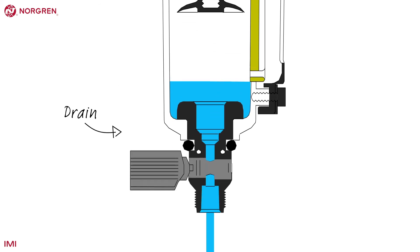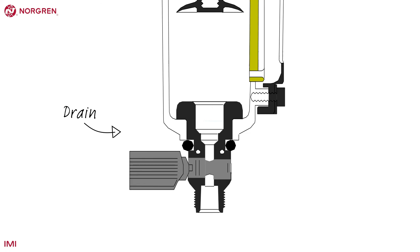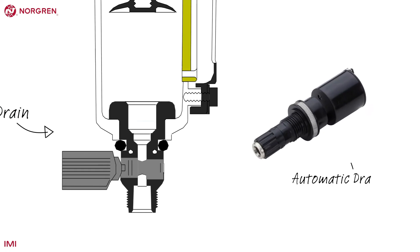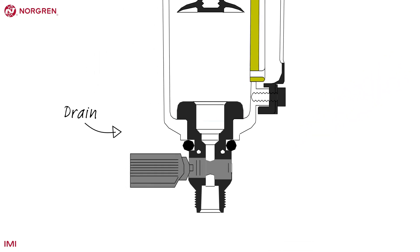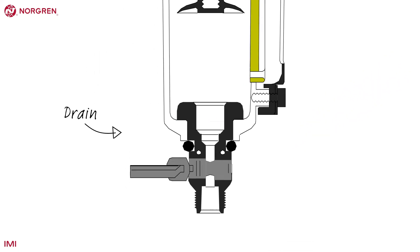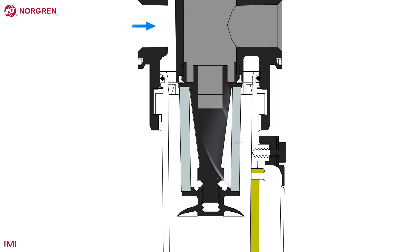This is so the water and particles that have collected here don't re-energize back into the air route. The water that does collect needs to be drained periodically. If the level reaches above the baffle, water will re-enter the airflow. We've used a manual drain in most of our animations to demonstrate the process more clearly, but remember always lead with an auto drain. We'll cover the reasons later.